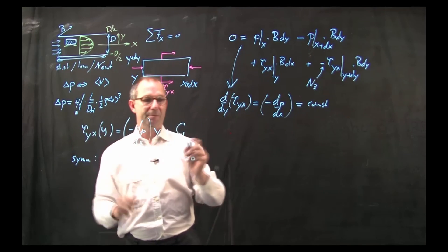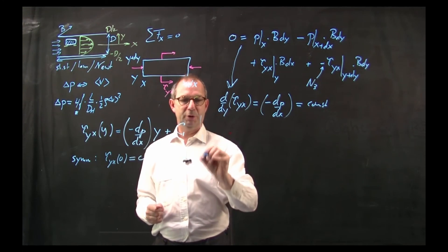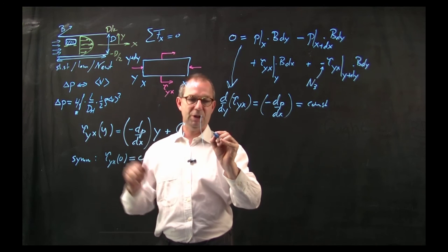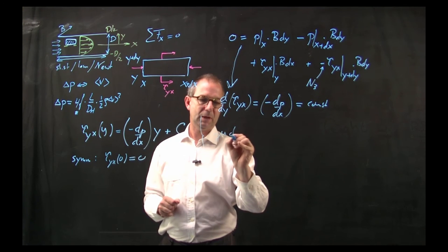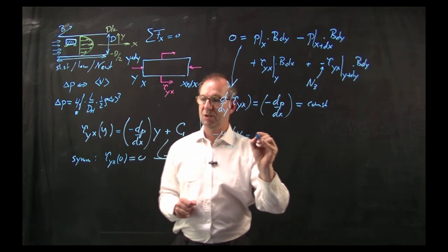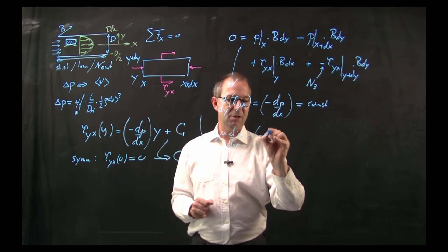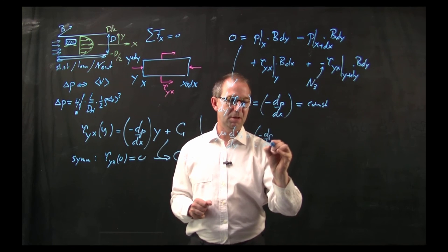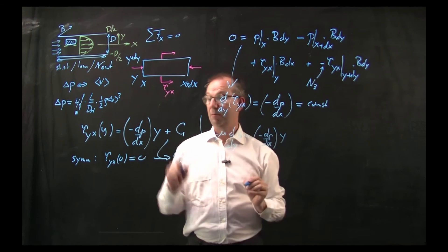Now I need to solve this part and I use that I have a Newtonian fluid. So mu times the shear is d/dy of Vx that I need to know and that is minus dp/dx times y. No constant.